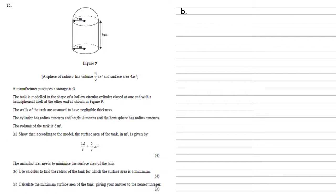For part b, the manufacturer needs to minimize the surface area of the tank. We need to use calculus to find the radius of the tank for which the surface area is a minimum. So, we've got our formula for the surface area, which is 12 over r, plus 5/3 πr². As we're going to use calculus to find the minimum, we're going to differentiate this and set that result equal to zero.